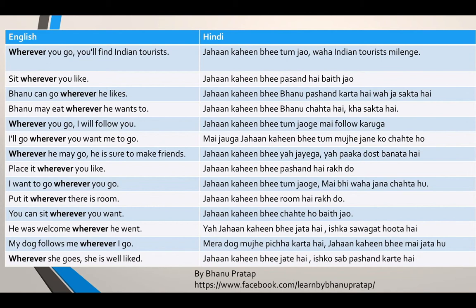I will go wherever you want me to go. 'I' means 'main', 'will' means 'karunga', 'go' means 'jana', 'wherever' is 'jaha kahi bhi', 'want' means 'chahna', 'me' means 'mujhe'. It's like doing something based on somebody else's desire. So this means 'main jahunga, jaha kahi bhi tum mujhe jane ko chahate ho'.